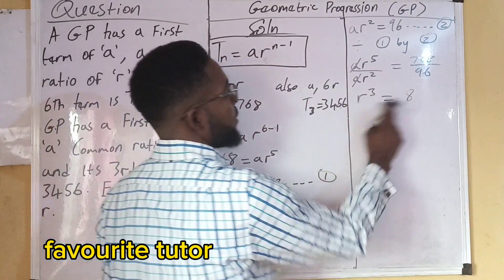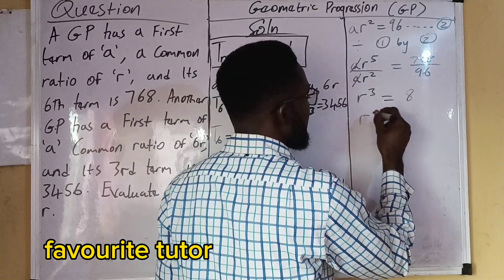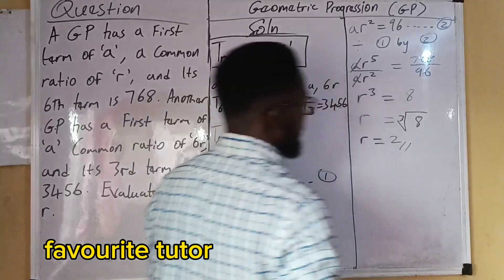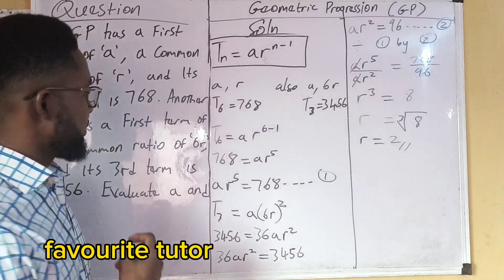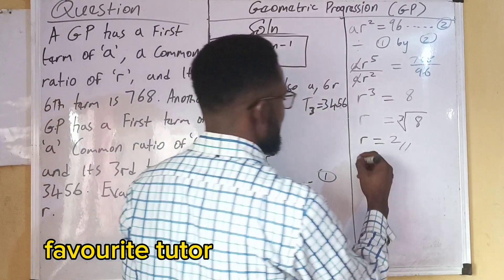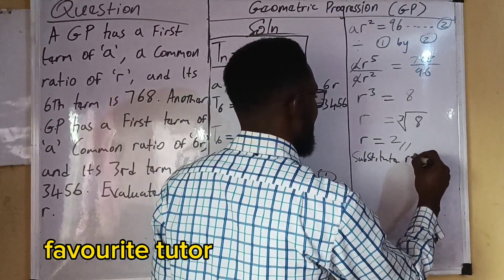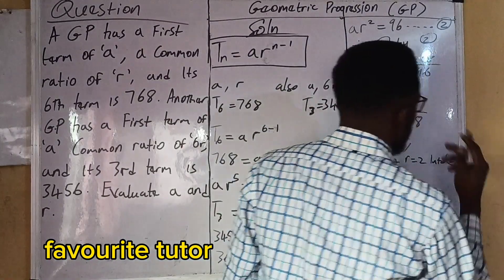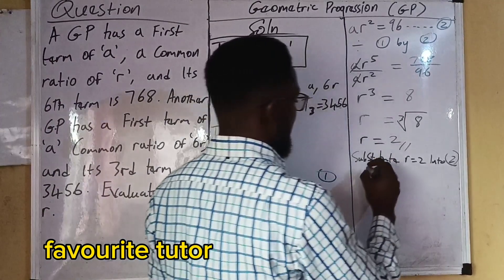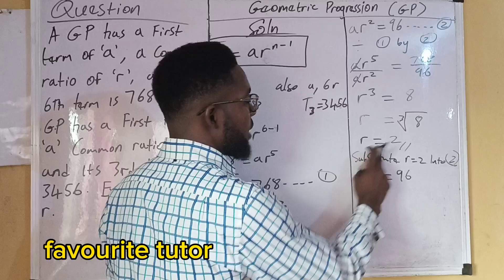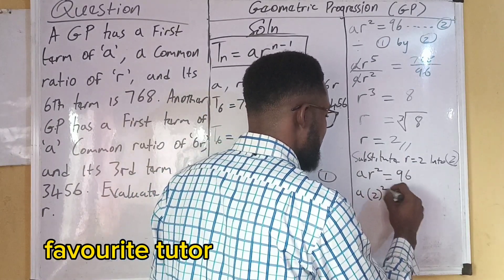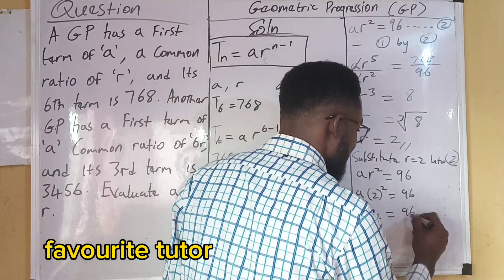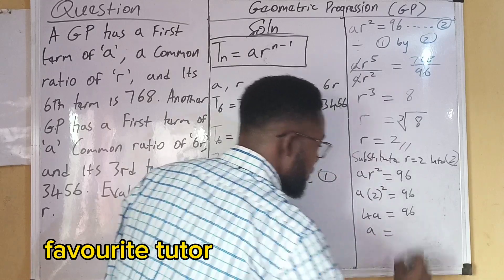I'm looking for R, so I take the cube root of 8. R equals the cube root of 8, which is 2. Now substituting R = 2 into Equation 2: A·R^2 = 96. So A·(2)^2 = 96, meaning A·4 = 96. Dividing both sides by 4 gives A = 24.